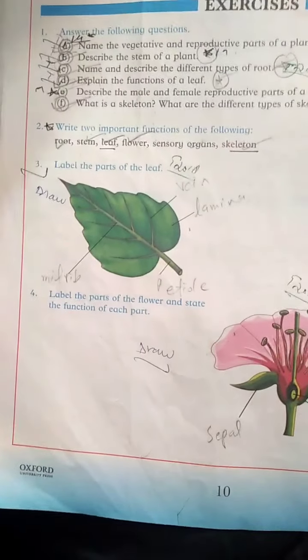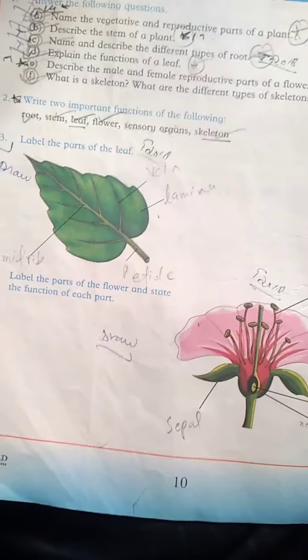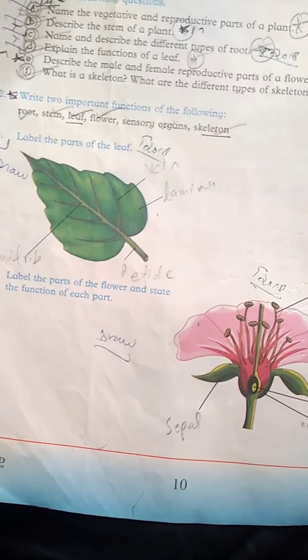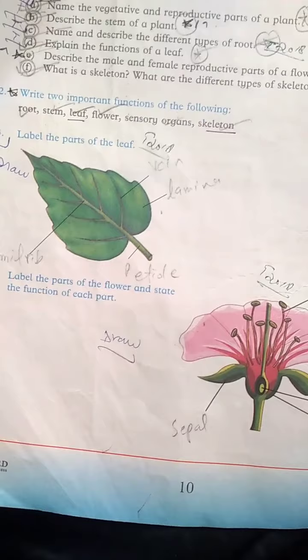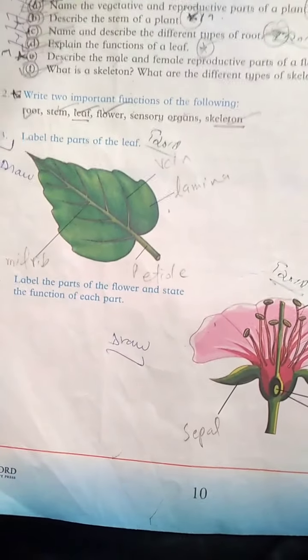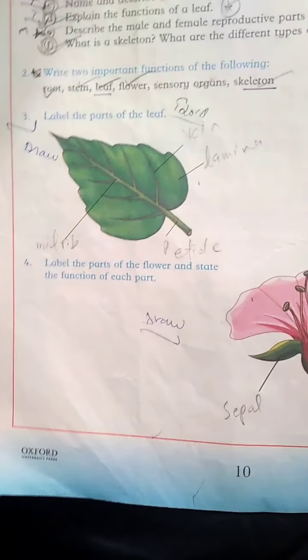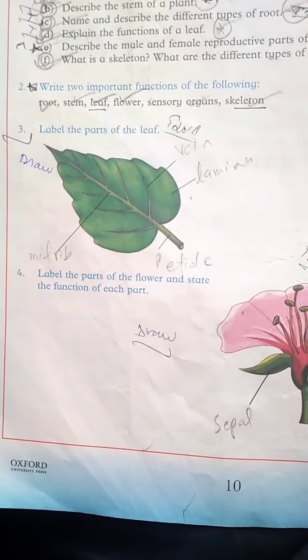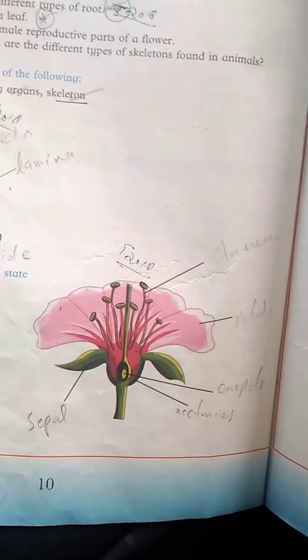This is your homework for this chapter. In your book, you will see question number 3: label the parts of the leaf. You have a leaf diagram in your book — you will see it from there and label the parts mentioned. You will also label the flower diagram in your book.